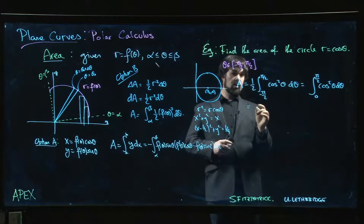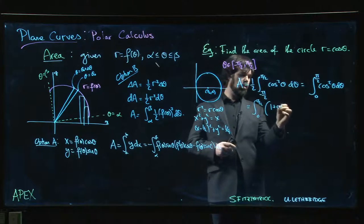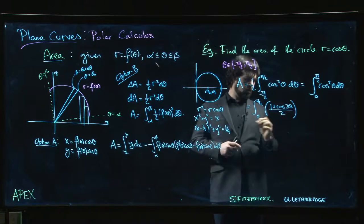Even power of cosine, so we need a trig identity for that. This is going to be 0, pi over 2, 1 plus cos 2 theta over 2.